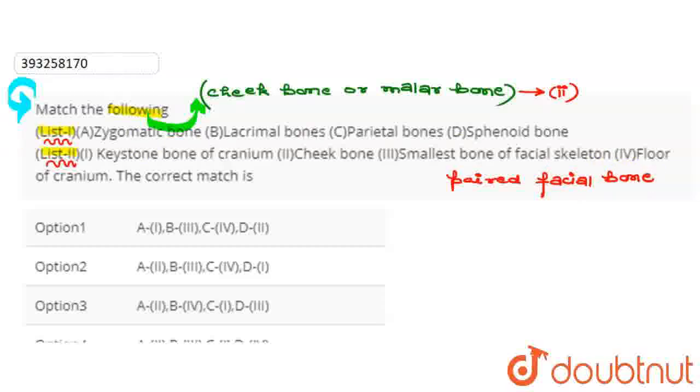Let's see third, which is given here, parietal bones. So parietal bone, if we talk about it, this is the floor of the cranium. On that basis, we will match it here with the fourth option.